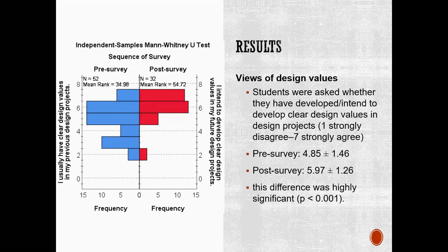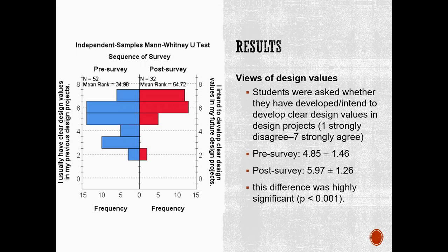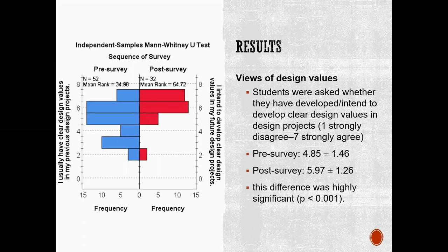In another question, students were asked whether they have developed or intend to develop clear design values in their design projects, where one represents strongly disagree and seven represents strongly agree. The mean score in the pre-survey was 4.9 and in the post-survey was about 6. This difference was highly significant, meaning students displayed a stronger tendency to develop clear design values in their future design projects.